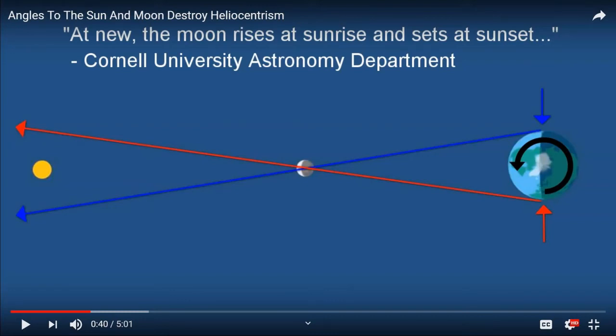Hi, this is Mike Bull. I've been putting out a few videos about how the angles to the sun and moon don't seem to align with the standard heliocentric model of our world.